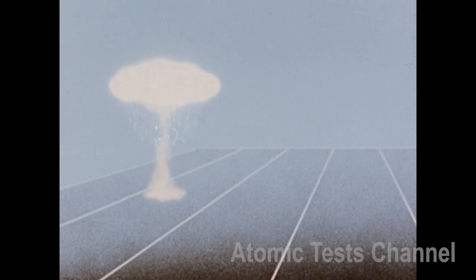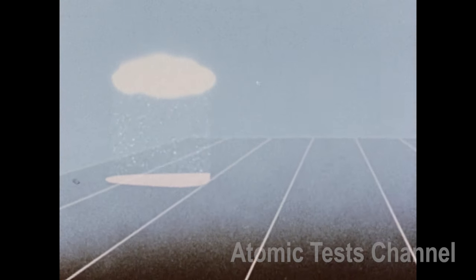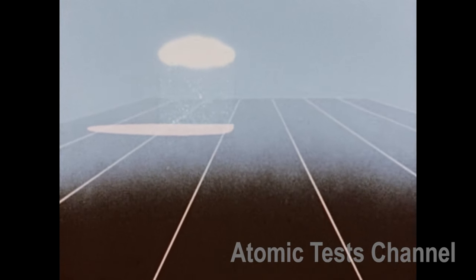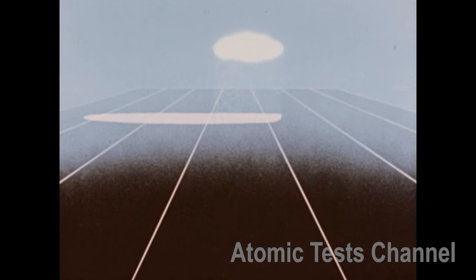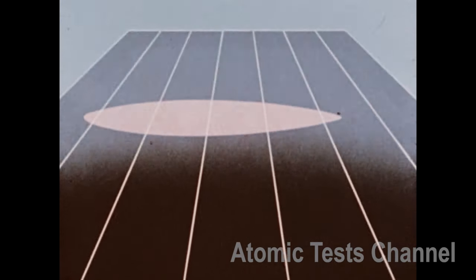Depending upon weather conditions, this cloud could travel many miles downwind from the site of detonation, depositing radioactive fallout on large areas of the countryside. These areas may remain hazardous for days, weeks or months, depending on the severity of the contamination.